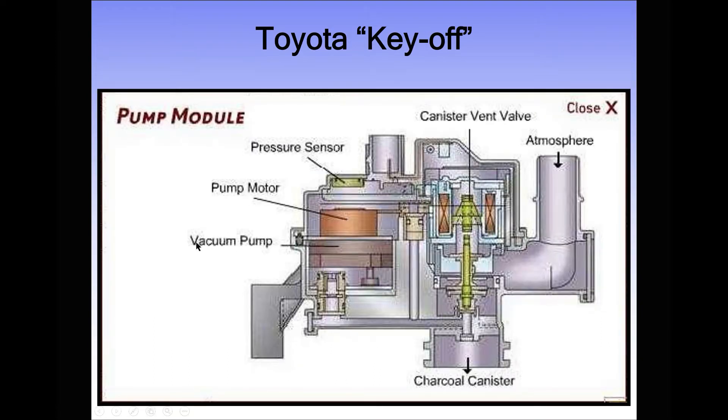Here's a cutaway of this system. You see an electric motor, a mechanical vacuum pump, and a pressure sensor to let the PCM know system pressure. Then there's this vent valve that plumbs the pump to different things. It'll plumb it to an orifice so it can self-check, and it'll plumb it to the charcoal canister so it can check for leaks.